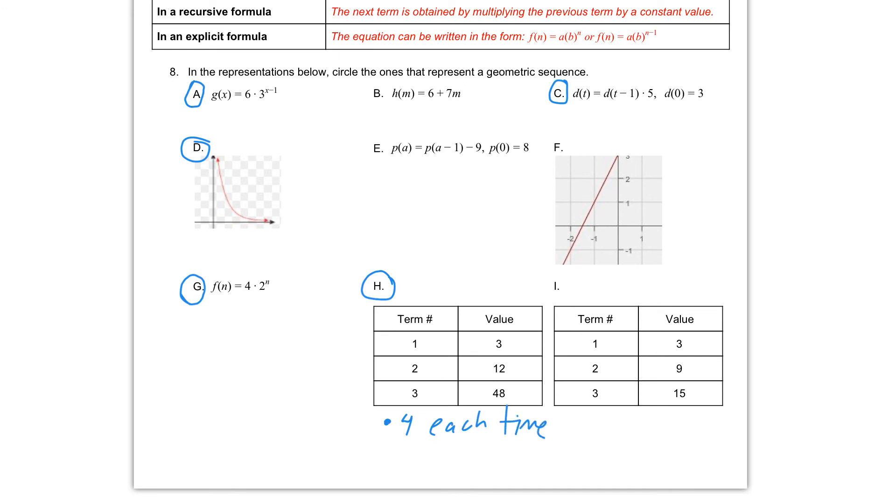And then finally, letter I, we go from 3 to 9 and 9 to 15. So to get from 3 to 9, we can think about multiplying by 3. 3 times 3 would be 9, but 9 times 3 would give us 27. So we are not multiplying by 3 each time.